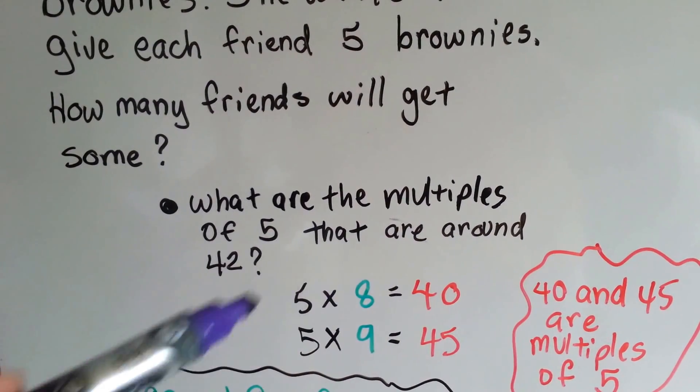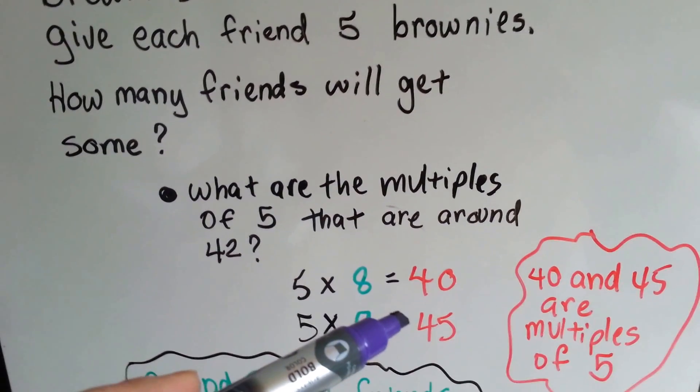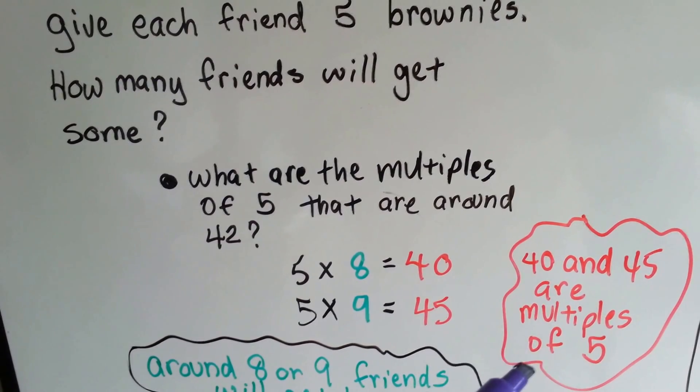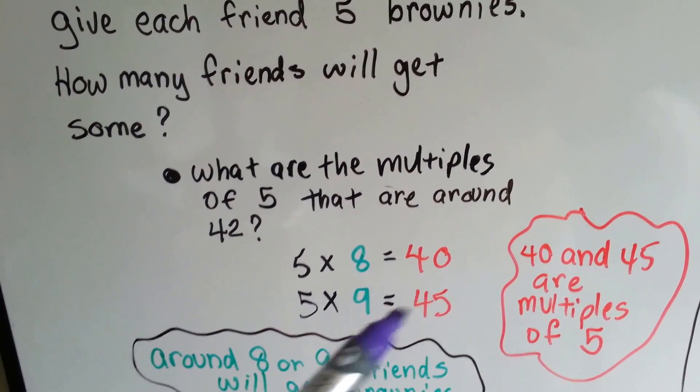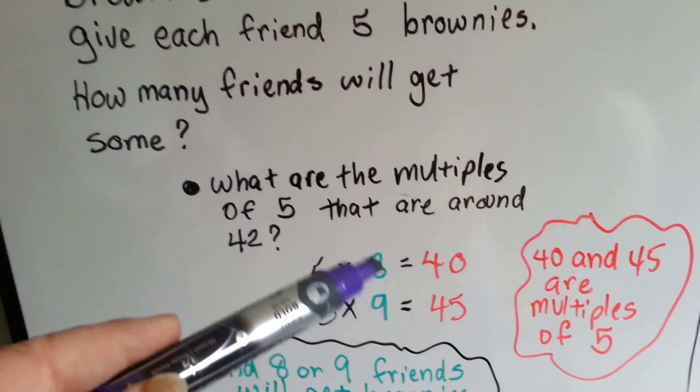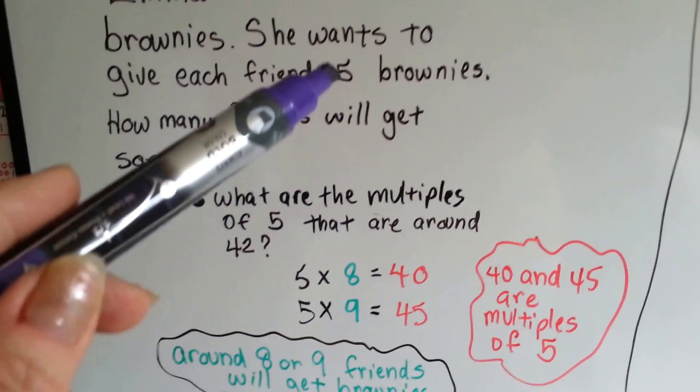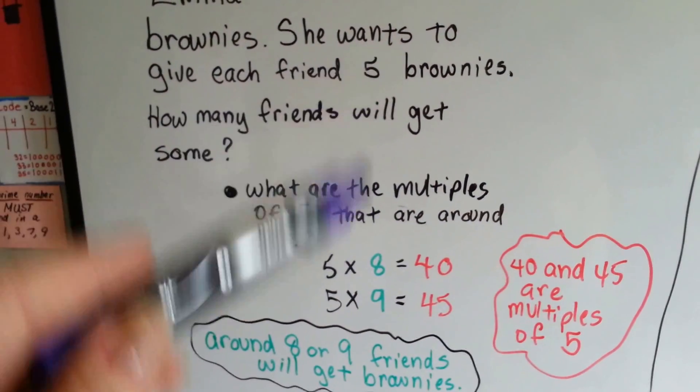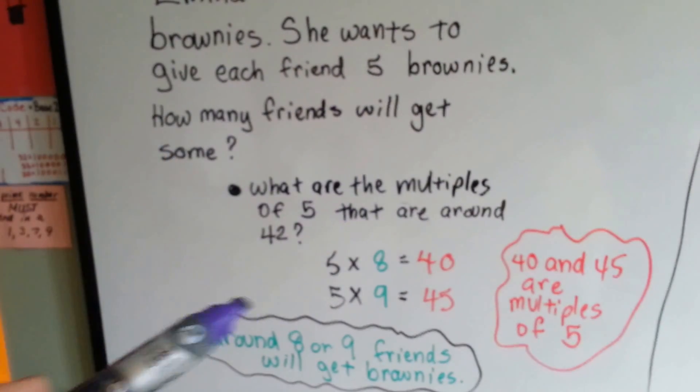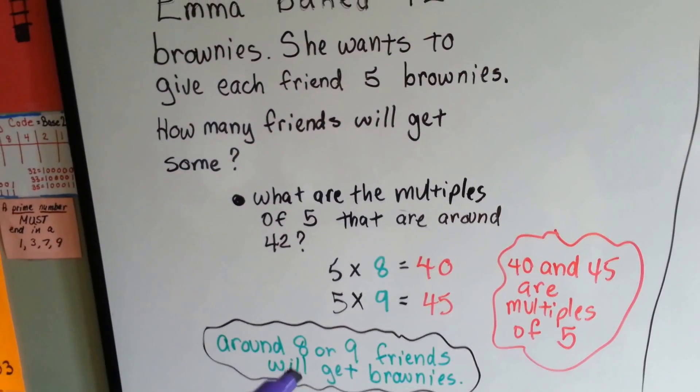Well, 5 times 8 is 40, and 5 times 9 is 45. 40 and 45 are multiples of 5. So if we wanted to estimate how many of her friends would get a bag of 5 brownies, it'd be 8 or 9 friends.